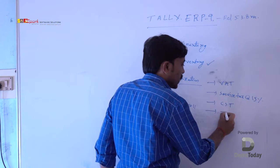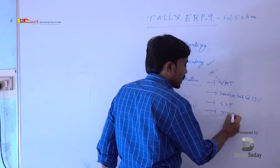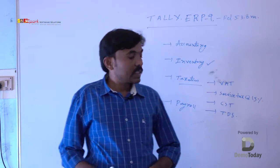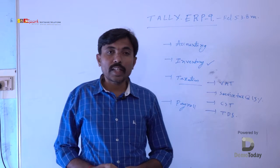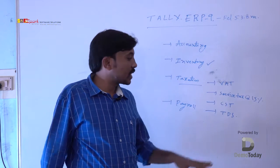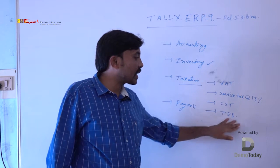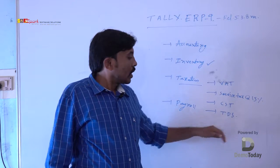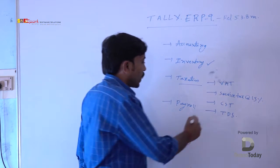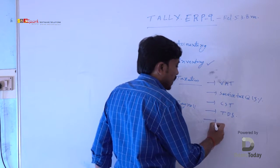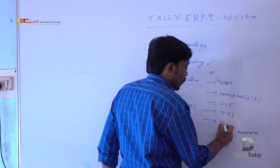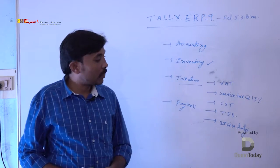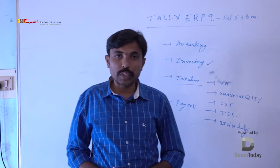Next is TDS — Tax Deducted at Source. TDS is a type of direct tax; it means indirectly collecting income tax. Next is excise duty, which is paid by manufacturing organizations.